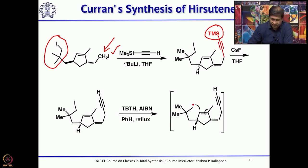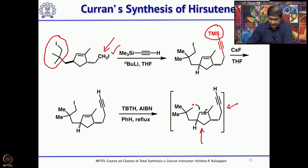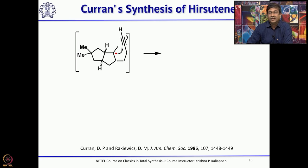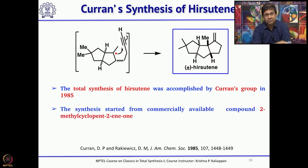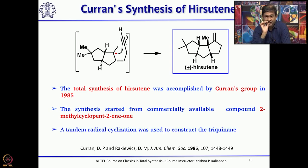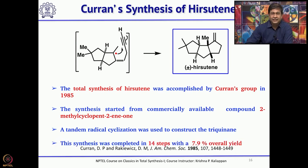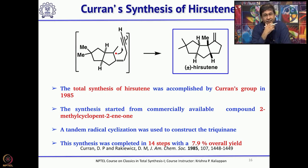The radical cyclization undergoes a tandem 5-exo-trig followed by 5-exo-dig radical cyclization to give the natural product hirsutene. Overall, the total synthesis of hirsutene from commercially available 2-methylcyclopentenone involved three key reactions: Claisen rearrangement, SN2' substitution, and tandem radical cyclization. The overall yield for the whole 14-step sequence was close to 8%, which is a very good yield for a 14-step process.